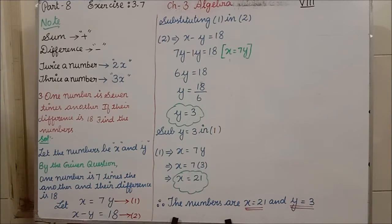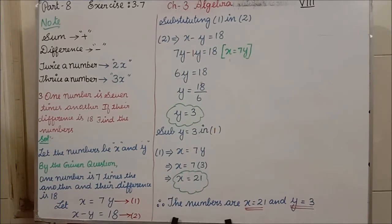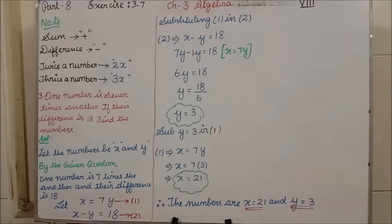Similarly, 7 times a number means 7 into x. These are the notes we are going to apply in exercise 3.7. In exercise 3.7, the first and second questions are one-mark questions — fill in the blanks and true or false — which you can do by yourself. Now I am going to start from the third problem. When I am reading the question, listen carefully so that you can solve the problem.